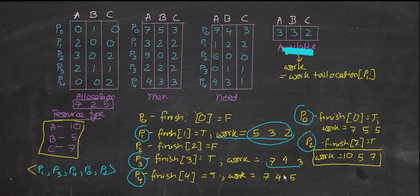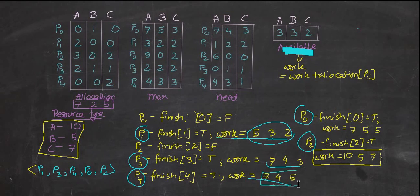For P4, we need 4,3,1 and we have 7,4,3 — enough. Work equals 7,4,3 plus P4's allocation of 0,0,2, giving us 7,4,5. Now we loop back and check P0 again. We now have 7,4,5 available and P0 requires 7,4,3, so we have enough. The flag for P0 is now true.